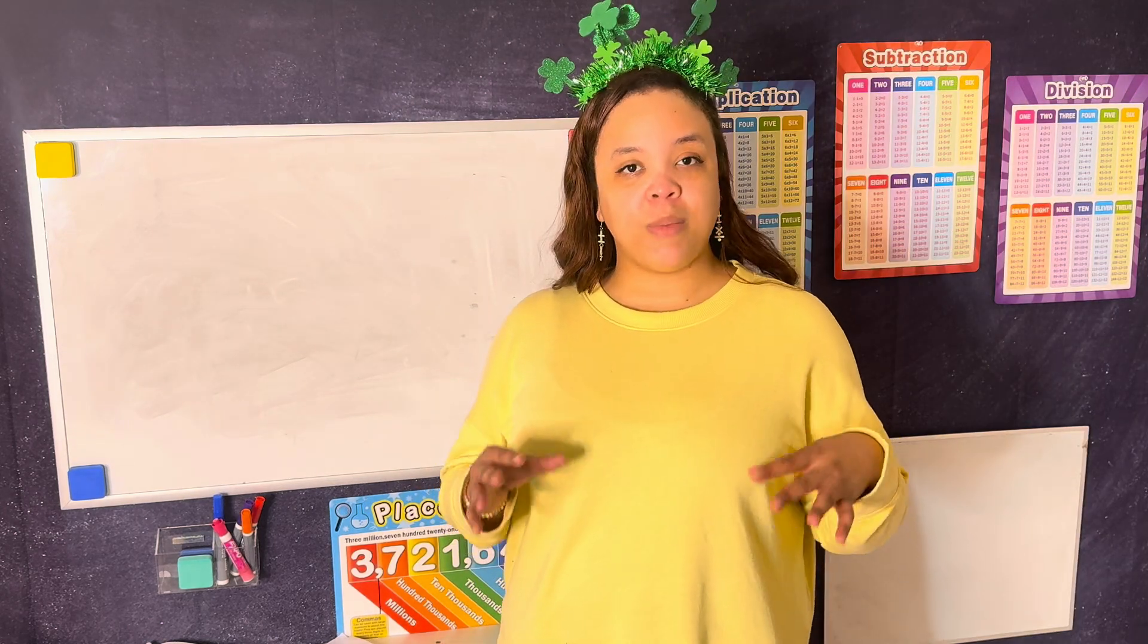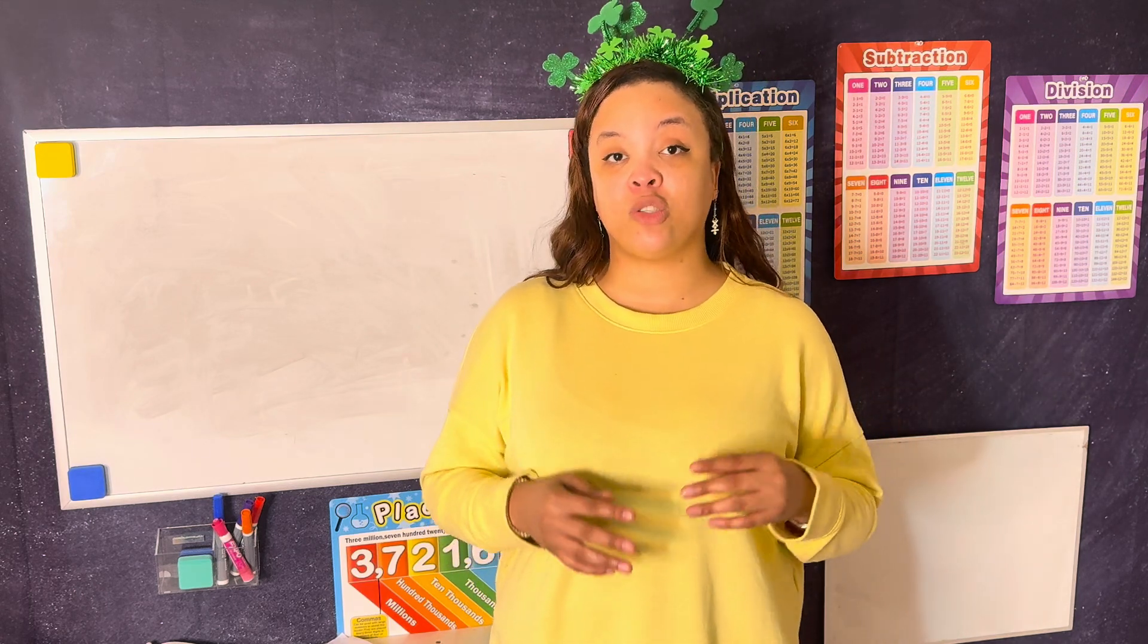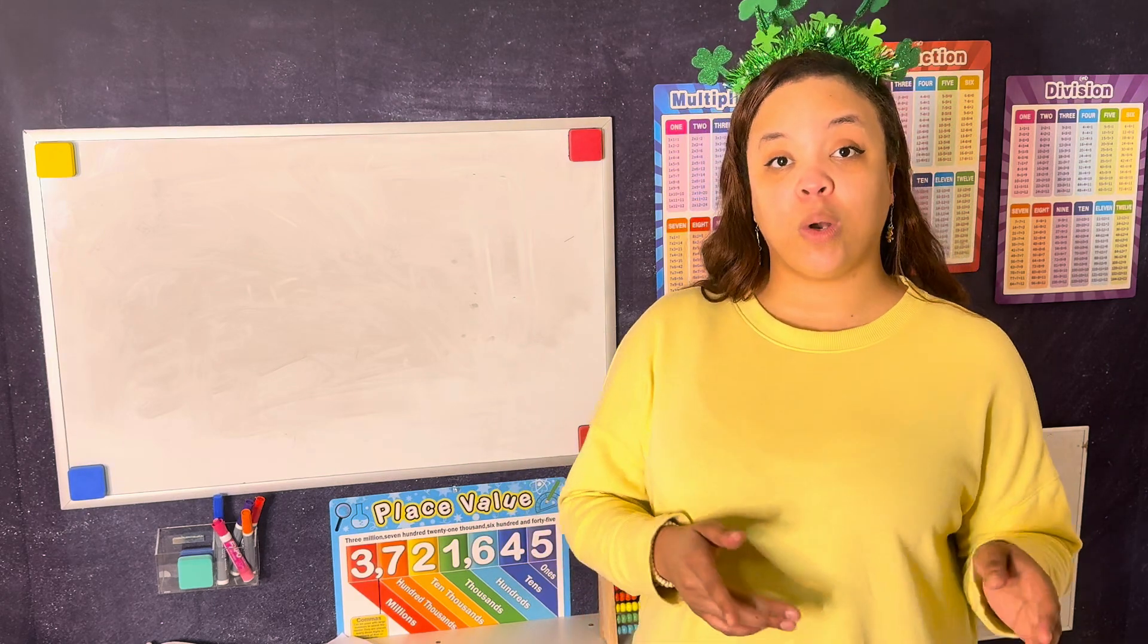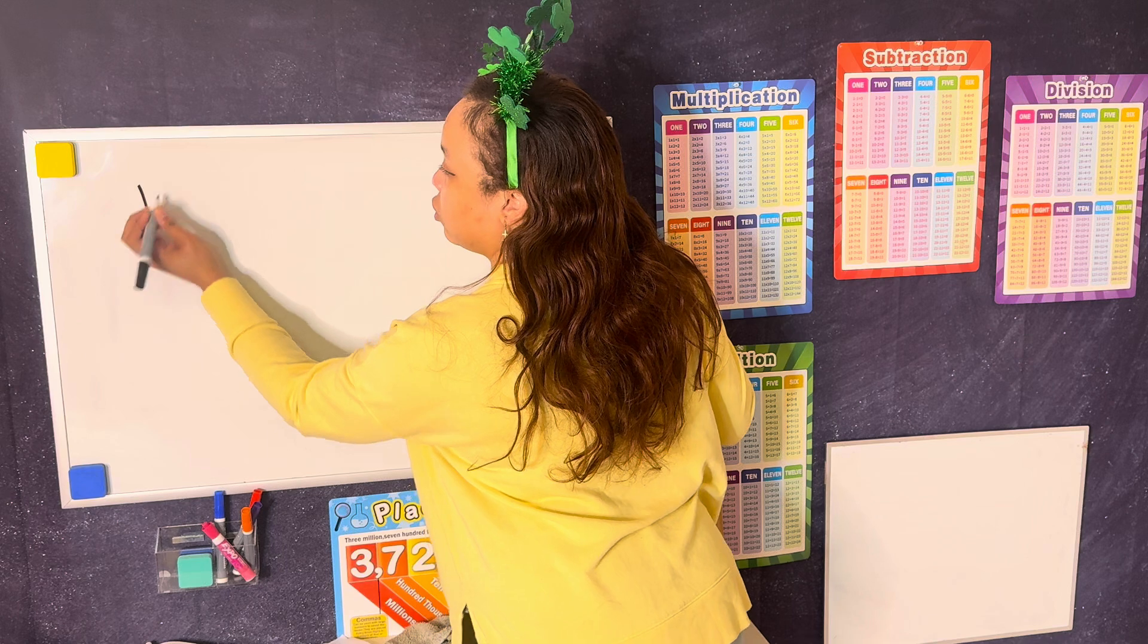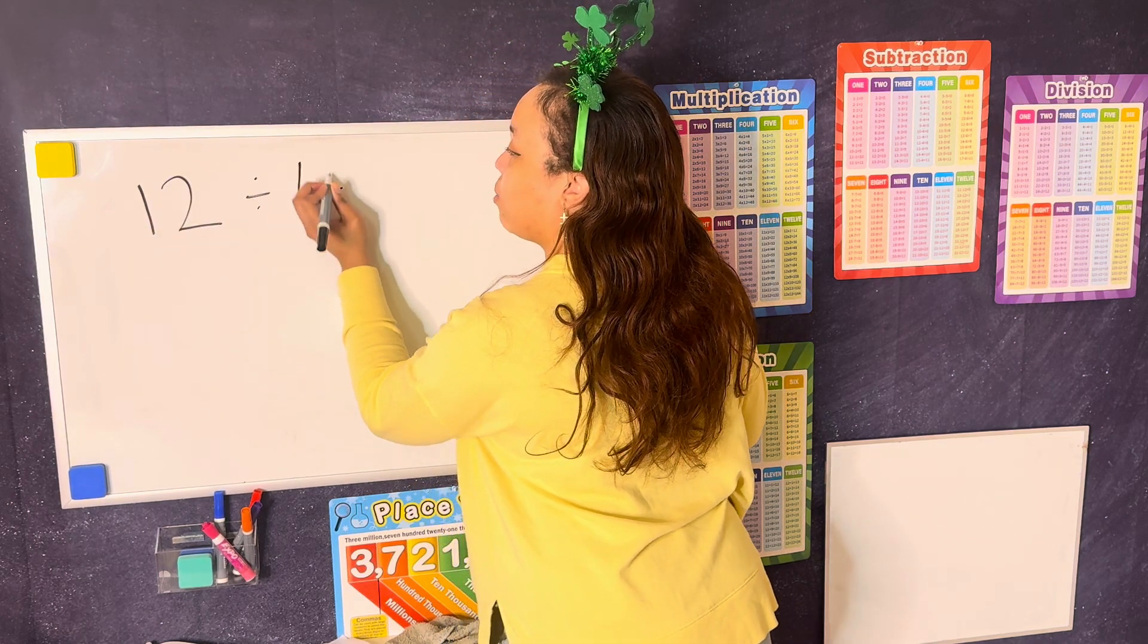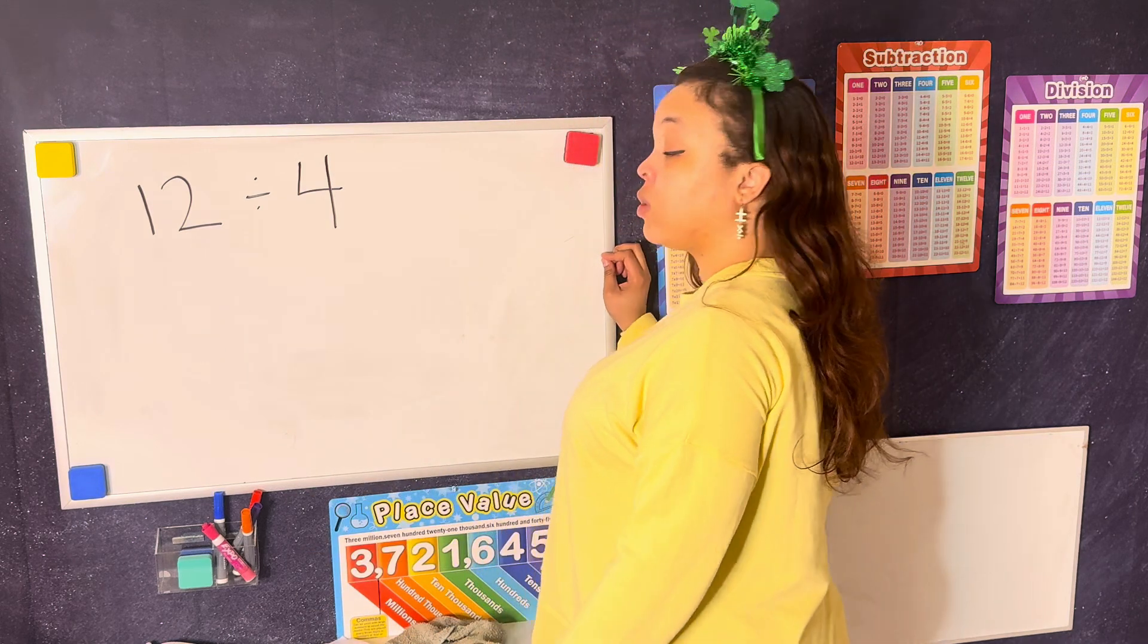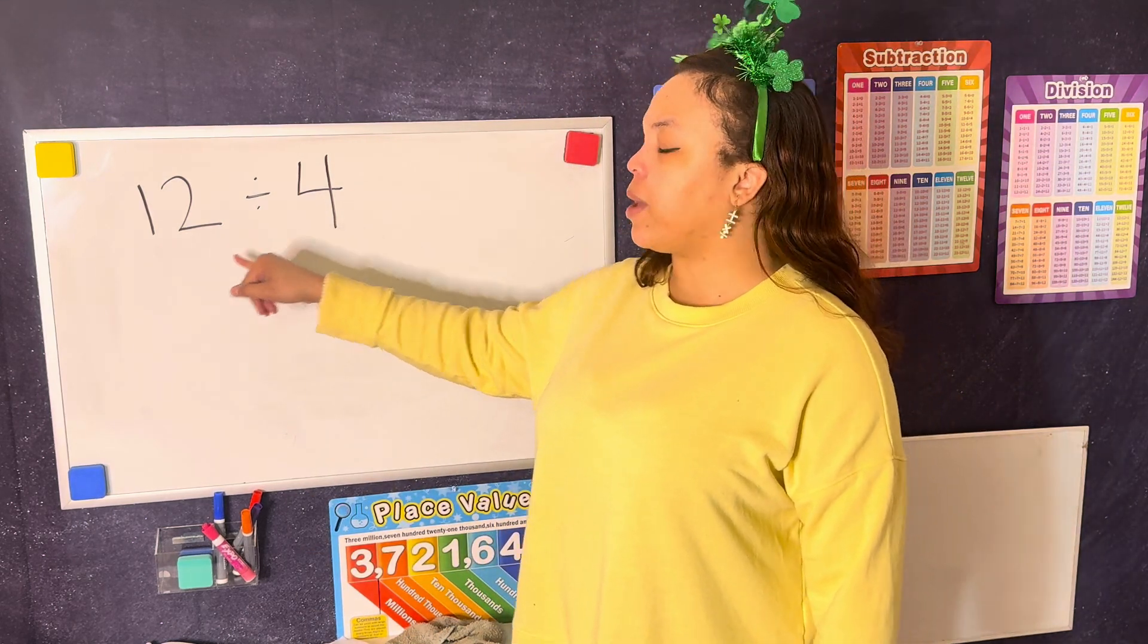When a problem asks you to divide something, you're splitting it into groups. So let's say we want to know what 12 divided by 4 is. We have 12 divided by 4. All this is asking us is how many groups of 4 make up 12.